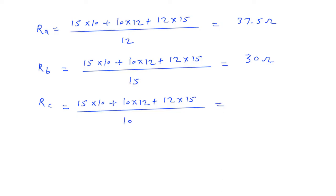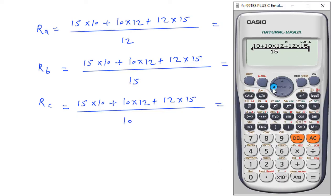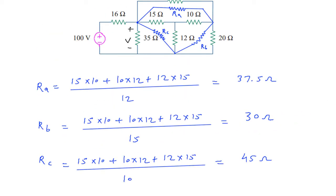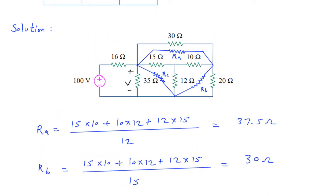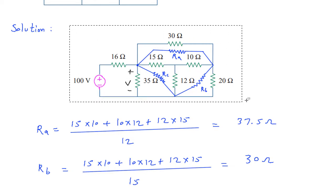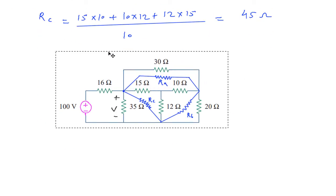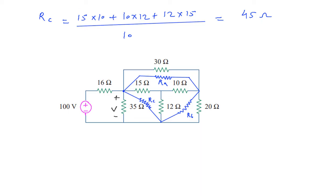The final value of Rc will be 45 Ohm. Now we have the values of Ra, Rb, and Rc. We will redraw the circuit again, erasing the Y connection and keeping the delta connection.